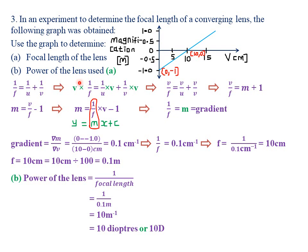Multiplying through by V: V/F = V/U + 1. Since V/U is magnification M, this becomes V/F = M + 1. Making M the subject gives M = V/F − 1, which can be written as M = (1/F) × V − 1. This clearly aligns with the straight-line equation y = mx + c, where the gradient m corresponds to 1/F.